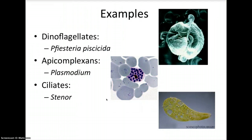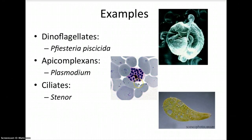Here are some common examples of dinoflagellates, including a carnivorous species mentioned on page 556 that feeds on its prey's bodily fluids. Plasmodium, as we know, is an apicomplexan used to spread malaria. And then we have stainer, a very common ciliate.